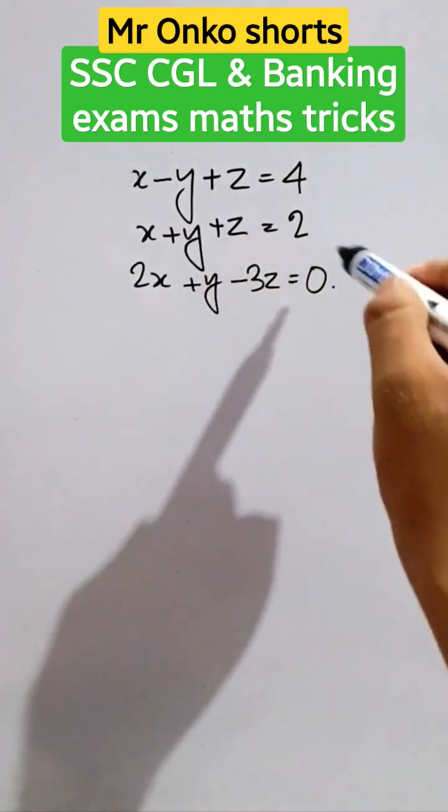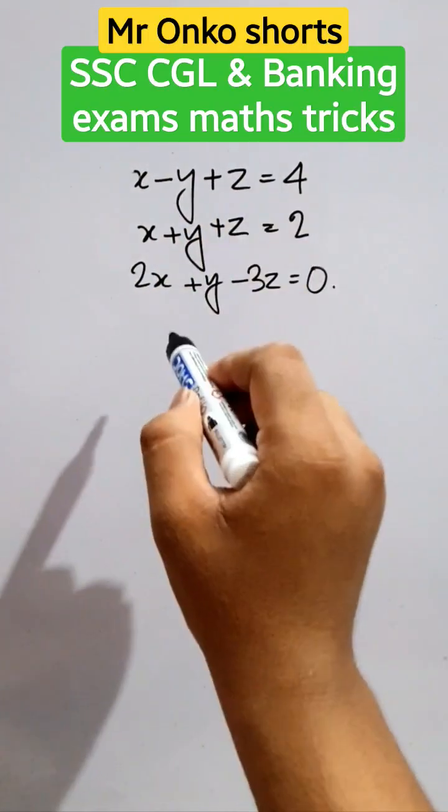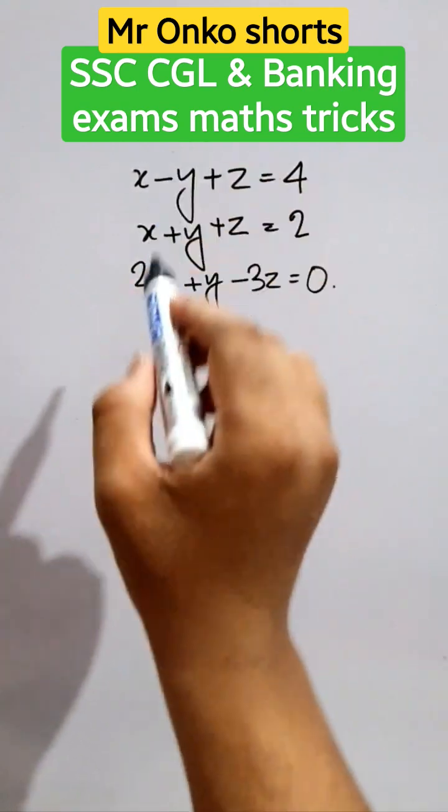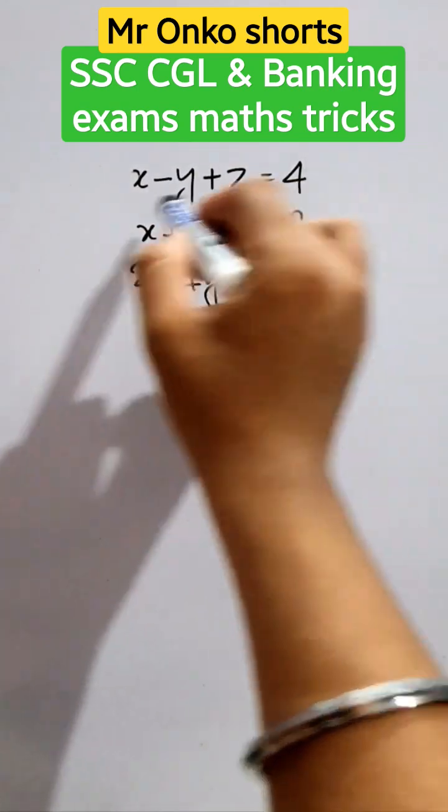When solving equations with three variables and three equations, here's how to solve it quickly. First, observe these two equations and add them.